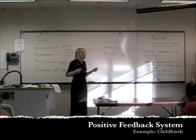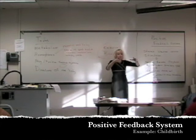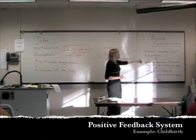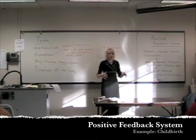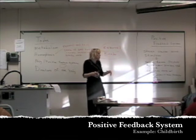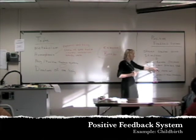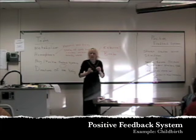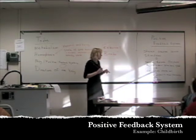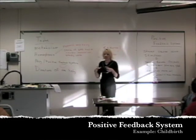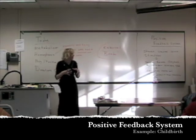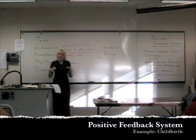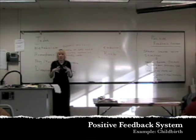The main positive feedback system in the body is having a baby. After nine months of pregnancy, the cervix starts to stretch and dilate. That stretching signals the brain's pituitary gland to stimulate the hormone oxytocin to start being produced. The oxytocin enters the bloodstream and causes the uterine wall to contract — the mom starts getting contractions. Those contractions signal the pituitary gland to produce even more oxytocin, which produces more contractions, and they work together.